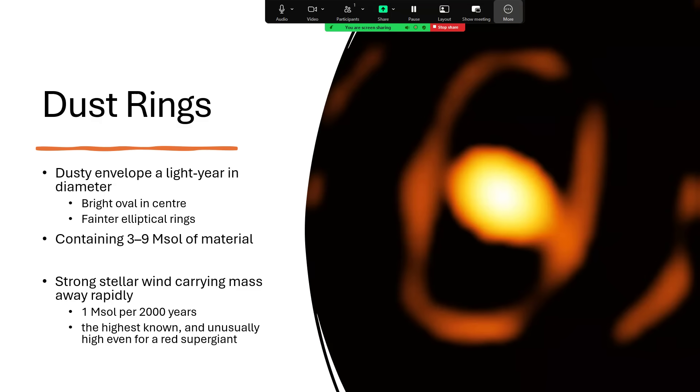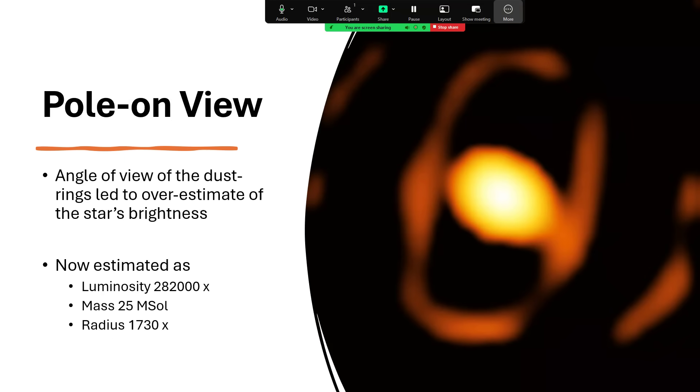So we think that that dust envelope contains at least three and perhaps as much as nine solar masses of material that's been carried out by the stellar wind. And it's probably losing about one solar mass every 2000 years, which sounds slow, but it's actually extraordinarily rapid. It's the highest known mass loss rate, even for red supergiants that tend to do this a lot. And we can also tell that we're looking at the pole, we're looking down on the rotational pole. The angle of view of the dust disks is making that fairly clear.